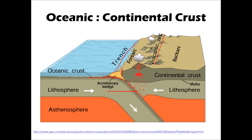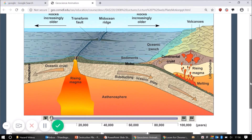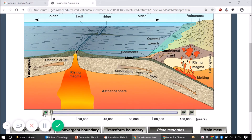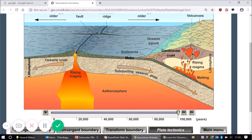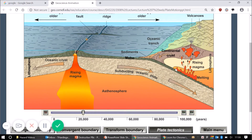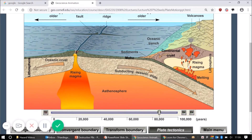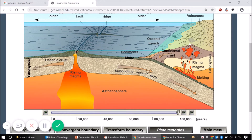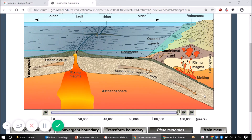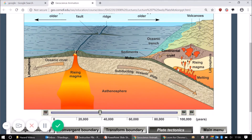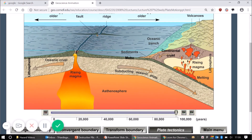A short animation illustrates this process: the subducting oceanic plate sinks beneath the continental crust, the upper part of that plate melts, magma rises upwards and escapes in volcanic eruptions. This process takes an incredibly long time because those plates are moving very slowly, but it leads to volcanic activity and earthquakes along this type of boundary.